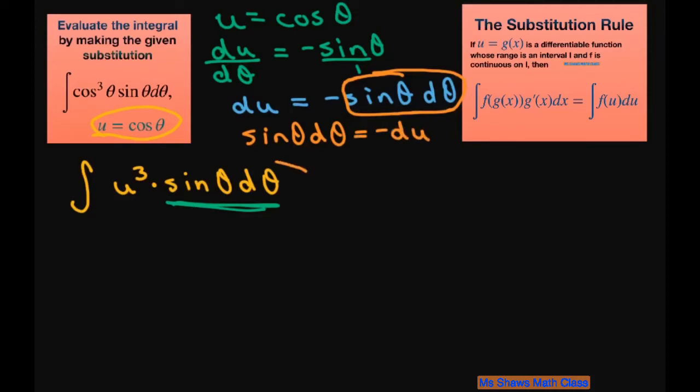So now I have that this part right here is -du. So let's rewrite this as the integral of u³(-du). I can pull this negative out and write this as -∫u³ du.